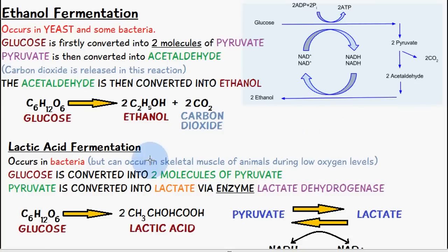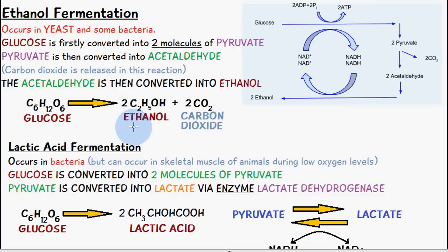Ethanol fermentation occurs in yeast and in some kinds of bacteria. Glucose is firstly converted into two molecules of pyruvate. Pyruvate is then converted into acetaldehyde, and carbon dioxide is released in this reaction. Then acetaldehyde is converted into ethanol. This equation here shows ethanol fermentation: glucose is converted into two molecules of ethanol and two molecules of carbon dioxide are released.